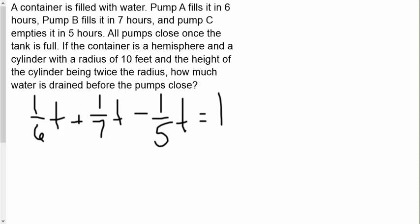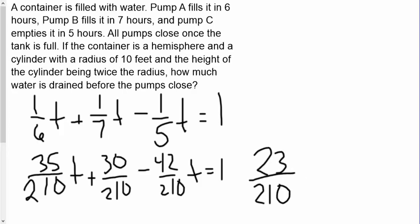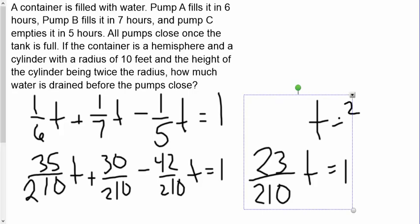Now we have to get a common denominator for all of these to combine them and that common denominator is two hundred and ten. So this is thirty-five two-hundred-tenths plus thirty two-hundred-tenths minus forty-two two-hundred-tenths, and that equals one. So this gives us sixty-five minus forty-two which is twenty-three. So we have twenty-three two-hundred-tenths T equals one, meaning that T is equal to two hundred and ten over twenty-three.